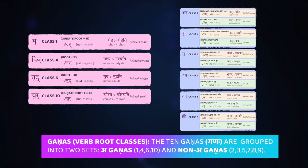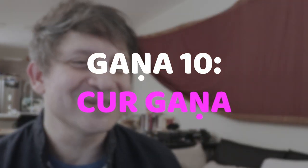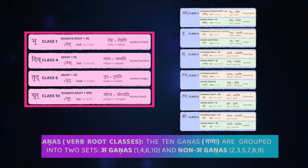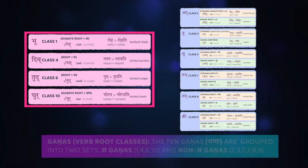Namaskaromi and welcome back. Now that we've made it through three of our four agarnas — classes one, four, and six — we can now turn to class ten of the agarnas. Remember, the agarnas are our classes of Sanskrit verb roots, these dhatus, where when you process the root to turn it into a present stem, you're going to add a gana marker that will in one way or another involve the letter a — the agarnas.